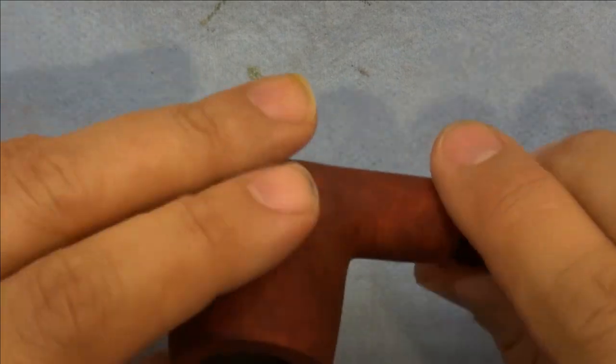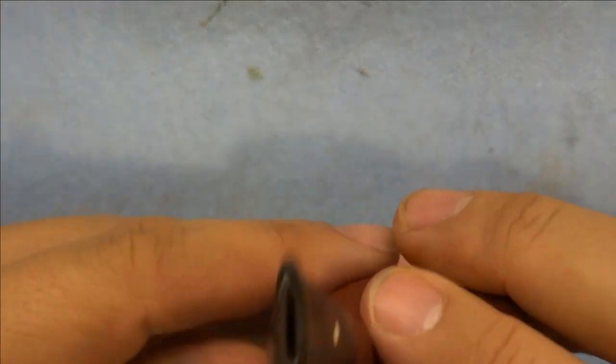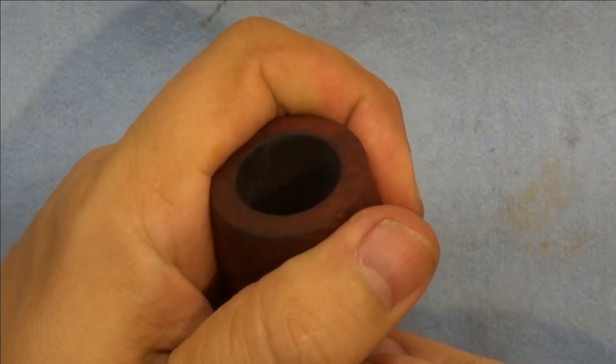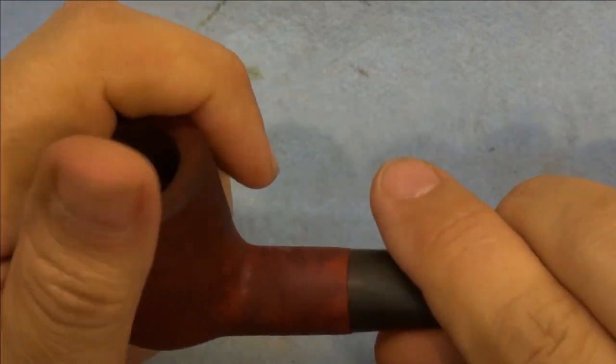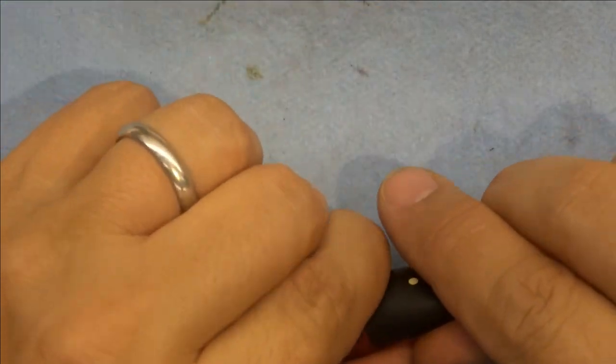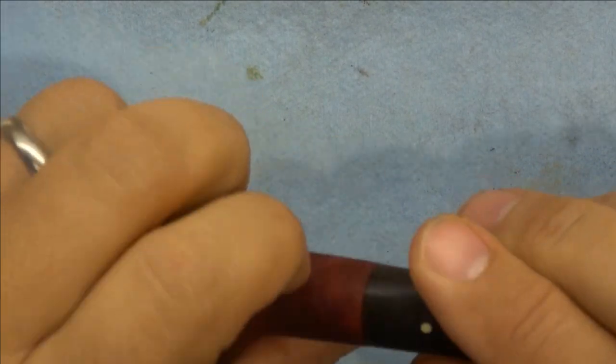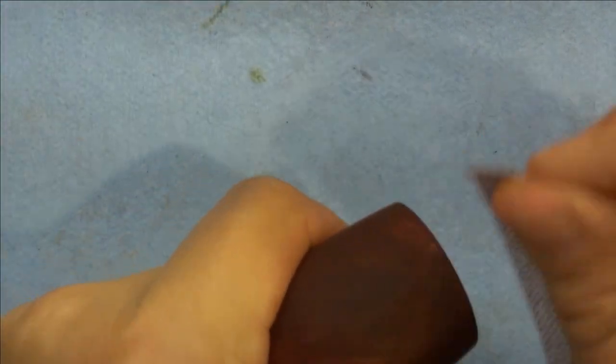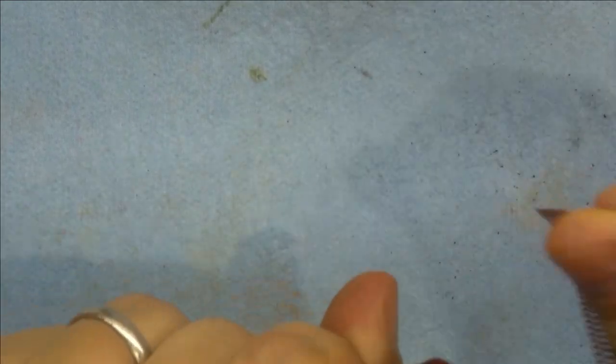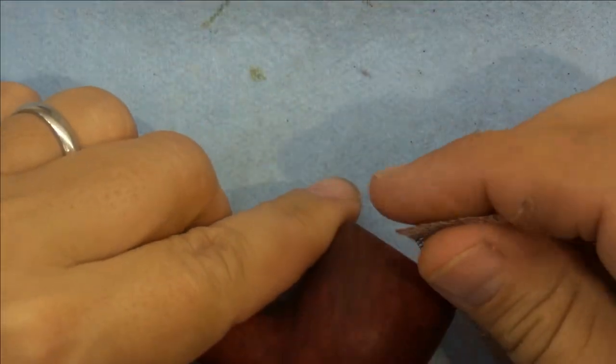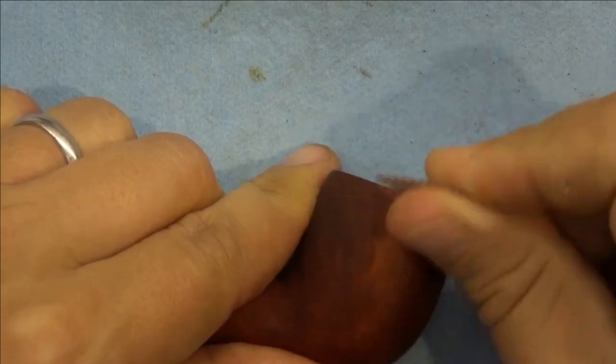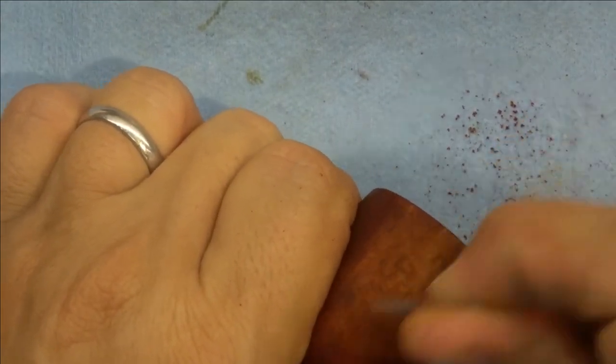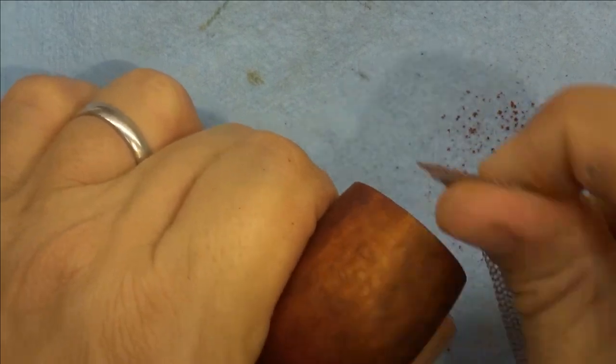The stain is completely dried, all the alcohol has flashed off. First thing I'll do is reseat the stem and make sure it's clocked properly, because I don't want to round over any edges while sanding. We'll begin removing what we've put on there, starting with 220 grit.